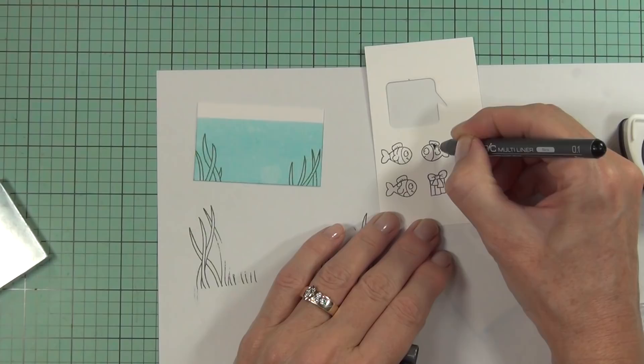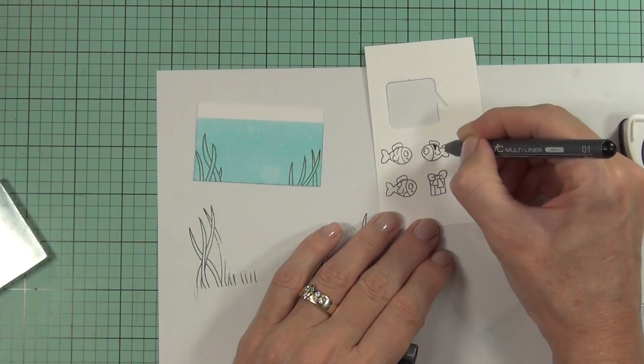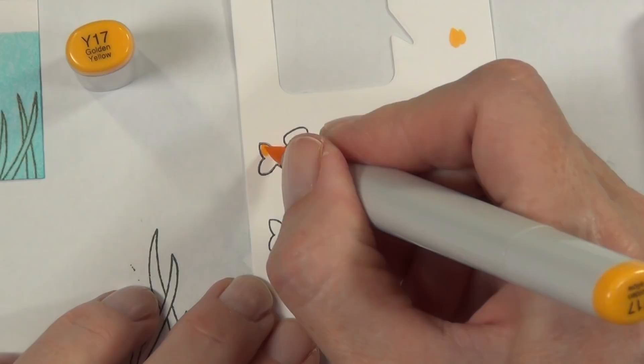I just masked off the background and used some Tumbled Glass distress ink to color that up. I stamped out just a small portion of the seaweed on each side of the fish tank just to make it look a bit more fish tanky.